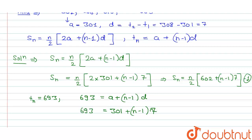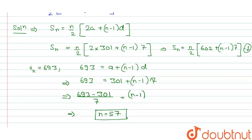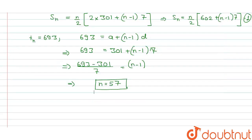When you do simple algebra, it's (693-301)/7 = n-1. Once you are able to do it, you will be able to get n as 57.